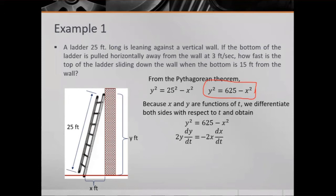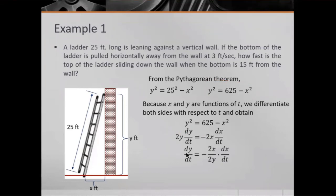Our target is dy/dt, so we isolate it on the left side. Moving 2y to the denominator on the right side, we get: dy/dt = -2x / (2y) · dx/dt. The 2's cancel, giving us dy/dt = -(x/y) · dx/dt.